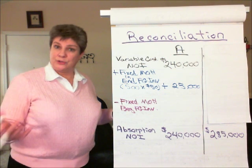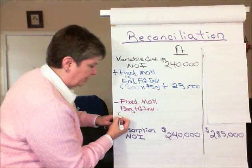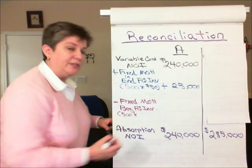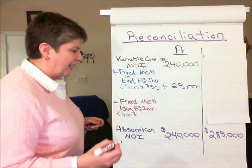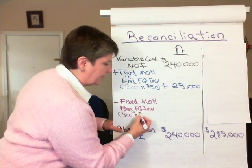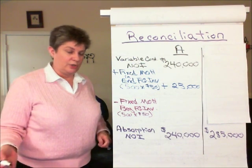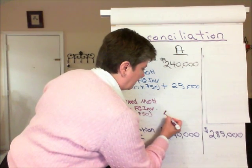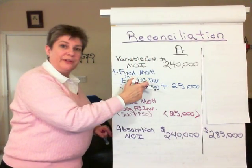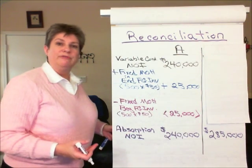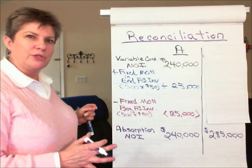Since we produced 9,000 and sold 9,000, there was no change in inventory level. We had 500 units in beginning inventory under Scenario A, and we assumed that beginning inventory had the same per-unit fixed overhead cost as the units produced this period — so it's the same $25,000. Therefore, $240,000 plus $25,000 minus $25,000 does indeed equal $240,000. That's the reconciliation of the incomes under the two approaches for Scenario A.